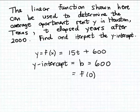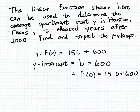For this particular example, if we calculate f of 0, that gives us 15 times 0 plus 600. That first term disappears because of the factor of 0, so we get that f of 0 is equal to 600. This is a second way of identifying the y-intercept — evaluate the function at the input 0, provided, of course, that 0 is part of the domain of the function.